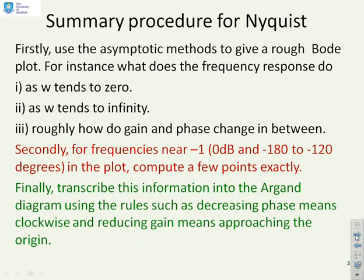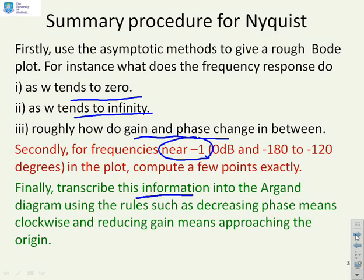Just a reminder of the procedure we're looking at. In order to do sketches, we ask questions like what happens as omega goes to zero or infinity and roughly how to gain and phase change in between. We might look more carefully at what happens near the minus one point, and finally we transcribe this information into the Argand diagram.